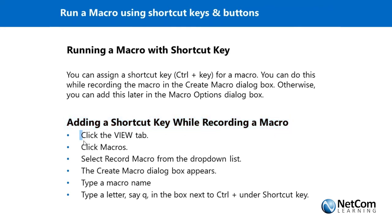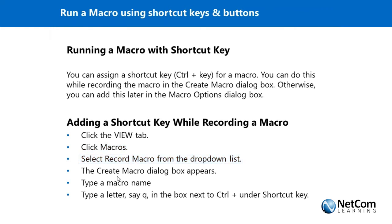To add a shortcut key while recording a macro, click the View tab or the Developer tab, then click on Macros. When the Macros window appears with the list, select Record Macro from the drop-down list to record a new macro.